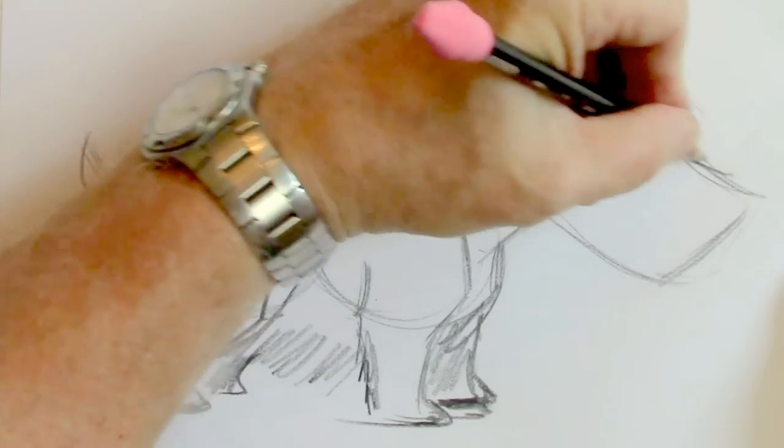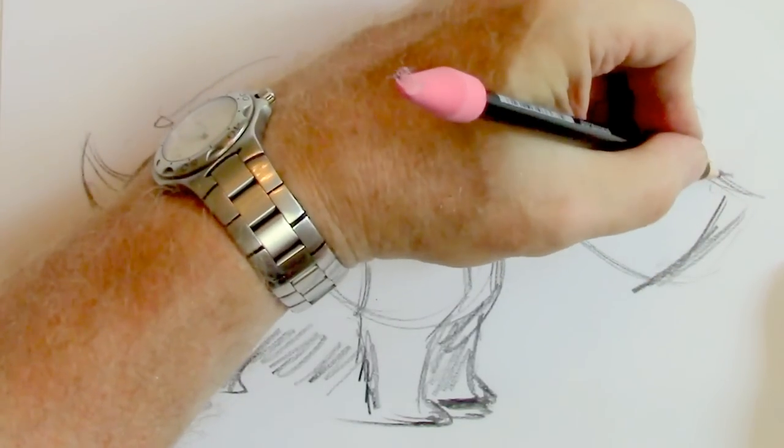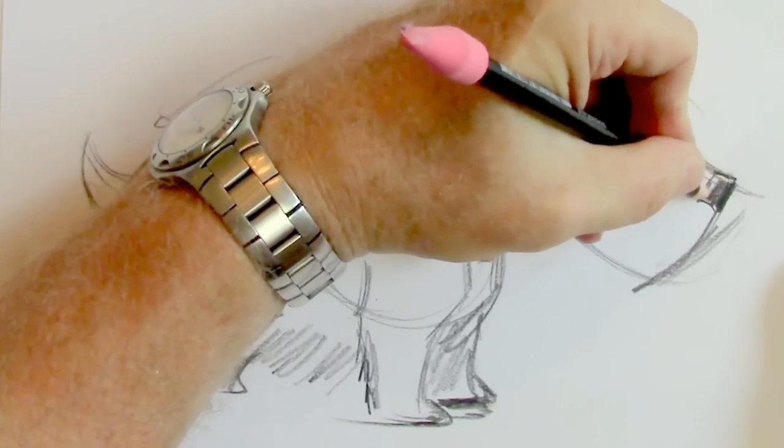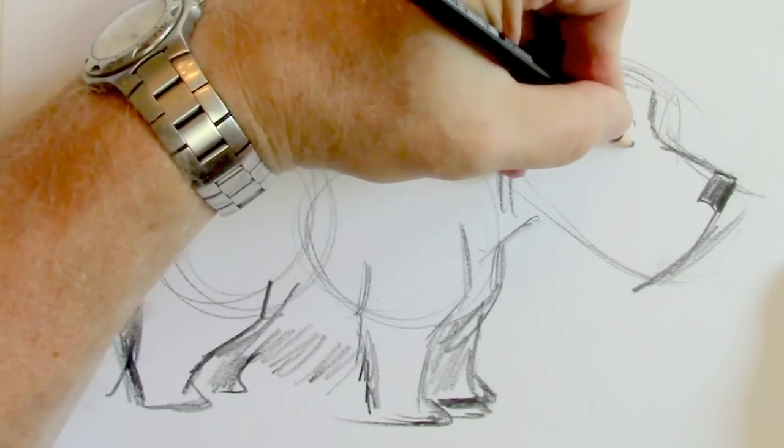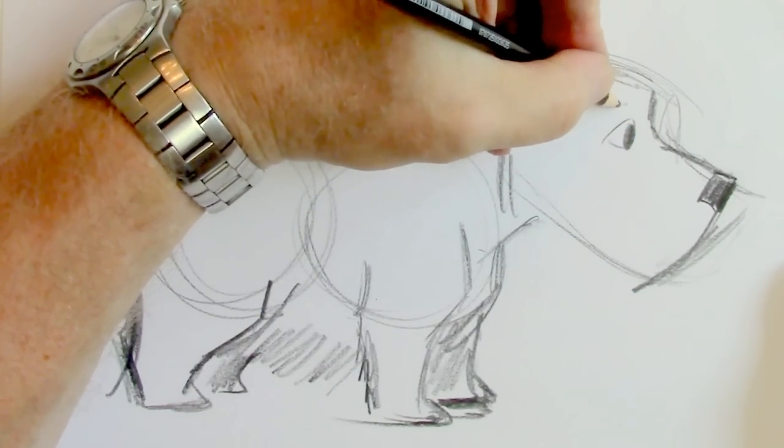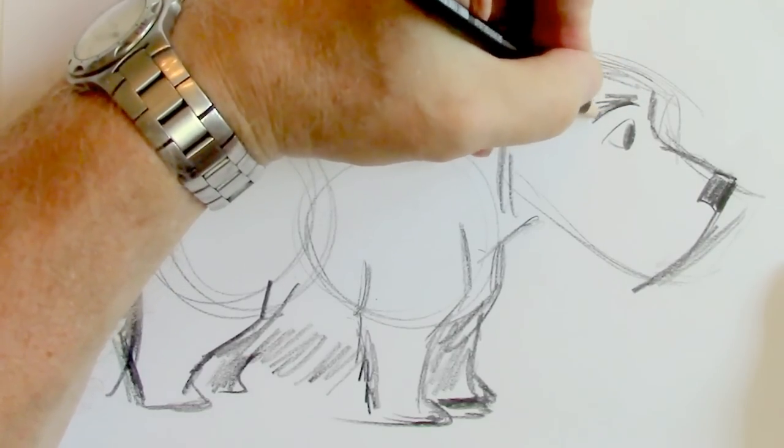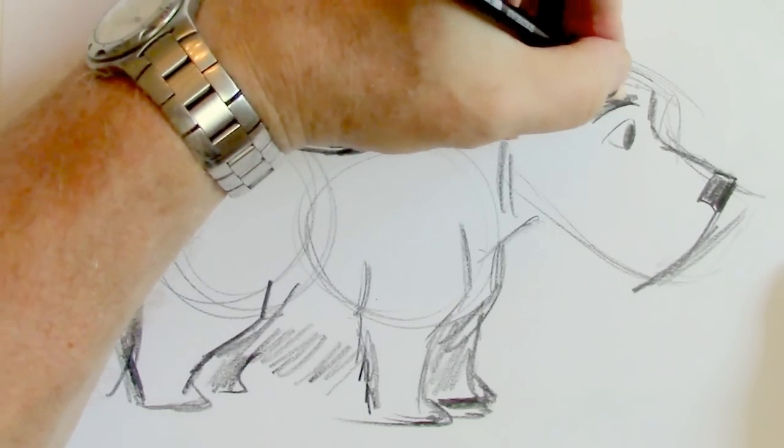And now we will give him his face. Dogs always do better with a face. Let's make him surprised. We'll give him a little bit of a furry fluffy eyebrow.